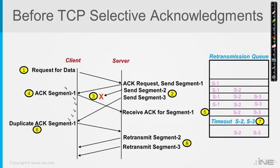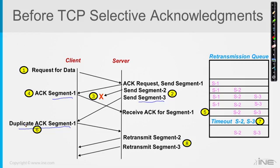Back when the client was creating these acknowledgements, he said: I got segment one, I can acknowledge it. Then he noticed: I got another segment, but the bytes are not contiguous. If I look at where the bytes left off in segment one, and where the bytes start in the next segment, there's a hole — a gap in between. The way TCP responds to that is it sends a duplicate ACK of segment number one.